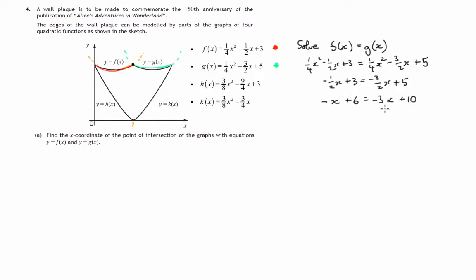So let's add 3x to both sides. That'll be 3x onto a negative x, that's 2x. And this will vanish. And let's at the same time take 6 from both sides. 10 minus 6 is 4. So 2x equals 4. Therefore x equals 2.